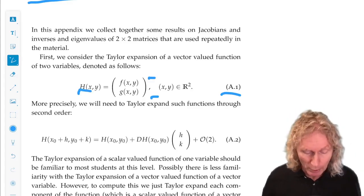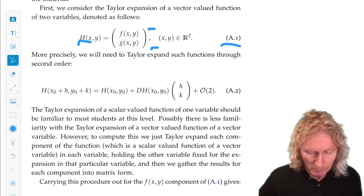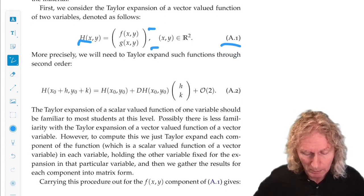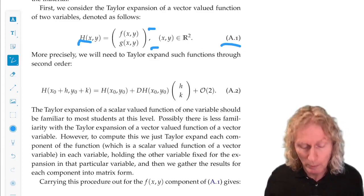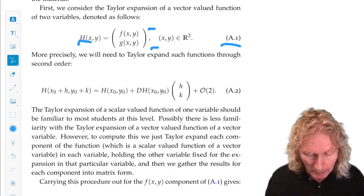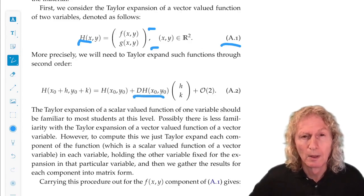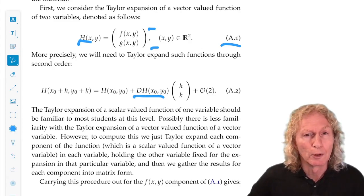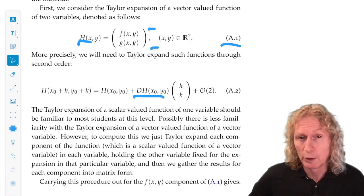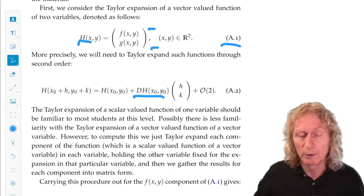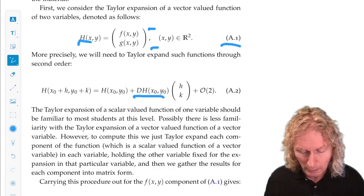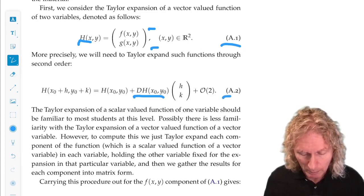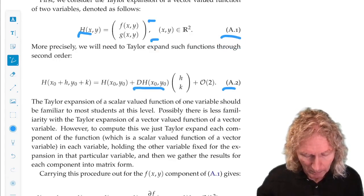We want to compute the Taylor expansion of h about a point x naught, y naught, and we will see that the first order term is the Jacobian derivative, a two-by-two matrix, and you can see the two-by-two matrix structure from considering dimensionality of this object. But now let's see how we do it.